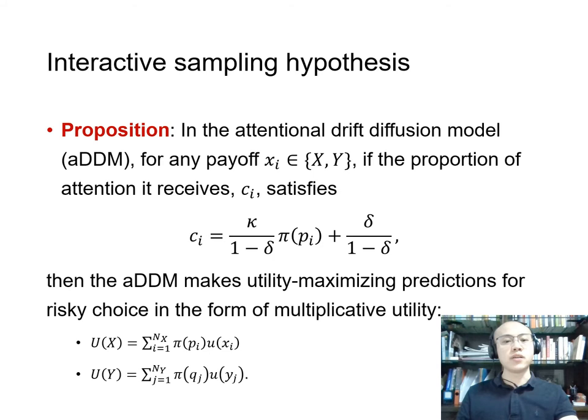To state more formally, here is the proposition related to how interactive sampling can make the ADDM produce utility-maximizing predictions. In the ADDM, for any payoff xi in a binary choice between X and Y, if the proportion of attention it receives is proportional to its associated probability or subjective probability, then the ADDM makes utility-maximizing predictions for risky choice in the form of multiplicative utility.